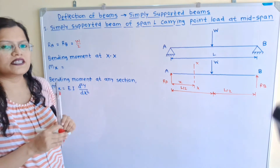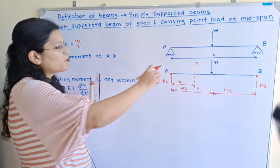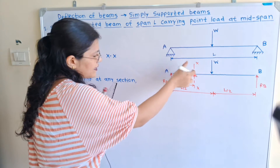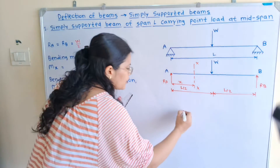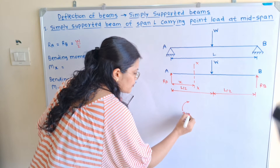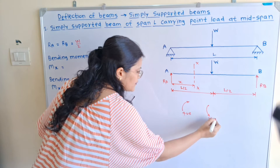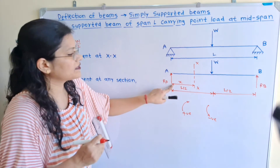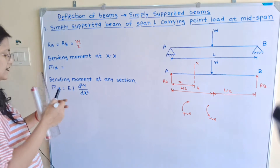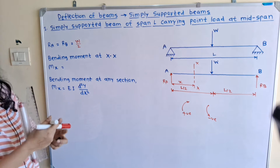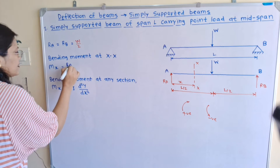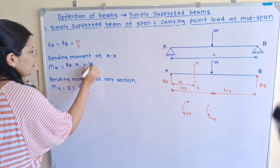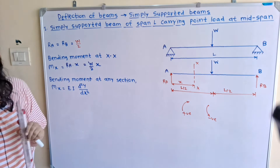Sign convention is the important part. Moving about section XX in the direction of RA gives a clockwise direction, so we use a positive sign for clockwise and negative sign for anticlockwise. Therefore, bending moment MX = RA × x. Since RA = W/2, we get MX = (W/2)·x.